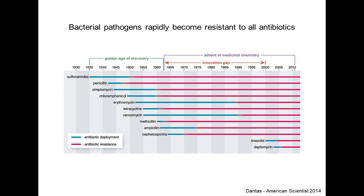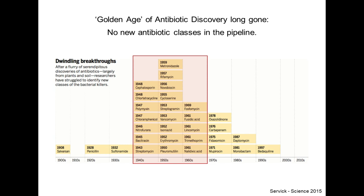This slide shows a timeline in blue of the year when an antibiotic class was first deployed throughout the 20th century, and in red the year when clinicians started seeing resistance in the clinic to those same antibiotics. For all antibiotic classes, resistance eventually develops in just a matter of 5, 10, or 15 years. So it's not a matter of whether resistance will happen, but when — and this is the case for all antibiotics in recent decades.